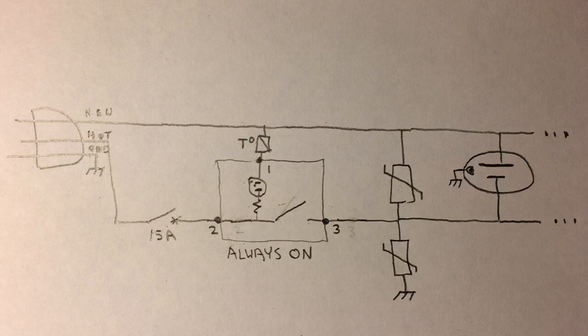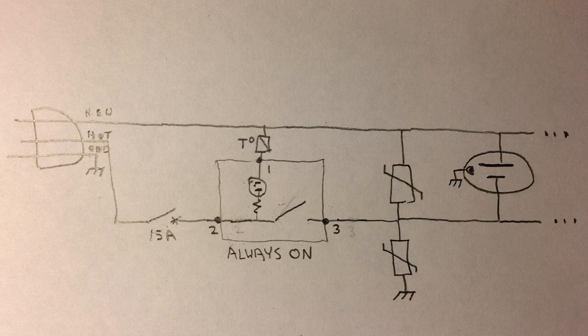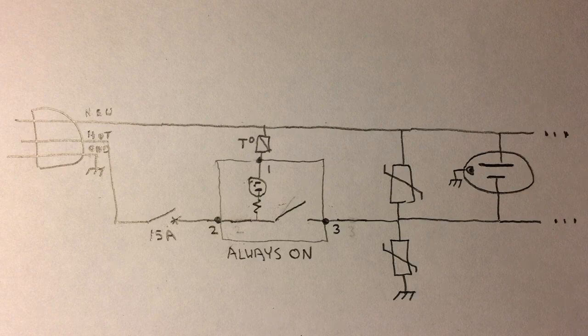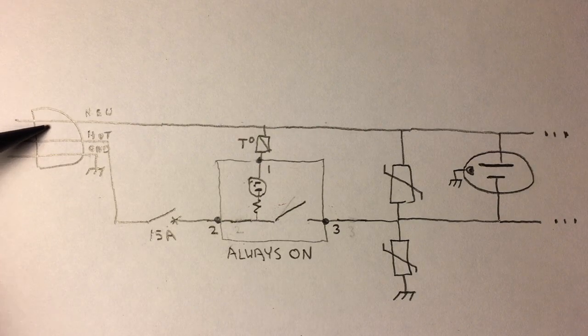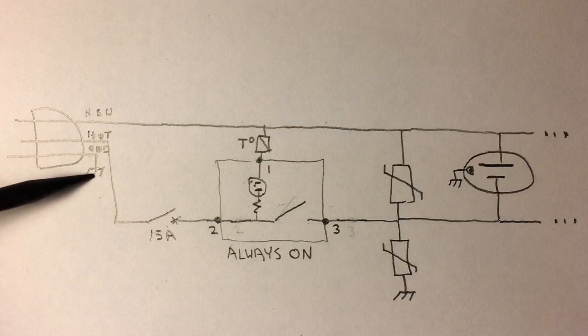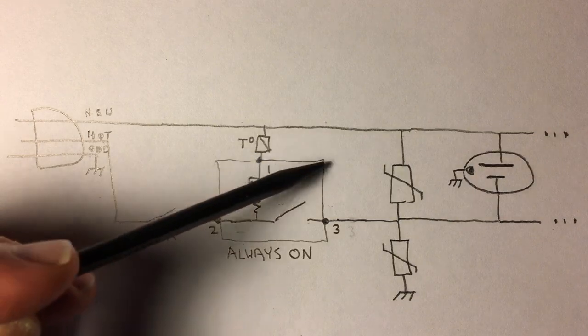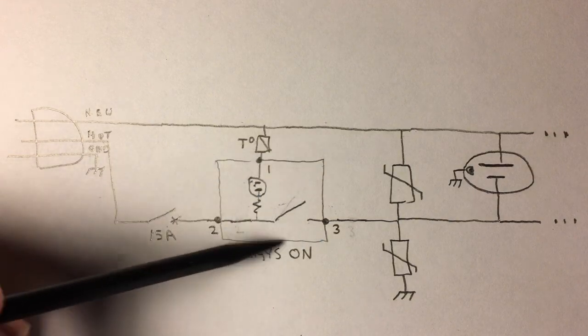So I made this little schematic of the circuitry inside the power strip, mostly to describe how the switch works, but it's also good to kind of just get an overview of how the thing works. There's really not much to it. This is the plug. So you have your neutral. I run the neutral across the top of the diagram. The ground goes right to chassis ground, and then the hot comes in, goes through the 15 amp circuit breaker, and then into our toggle switch, which is this square here.